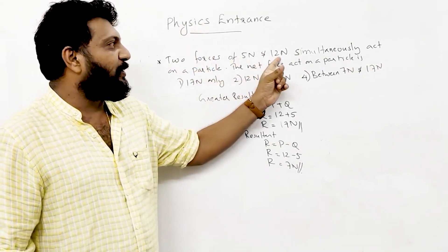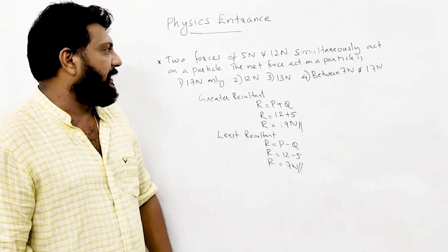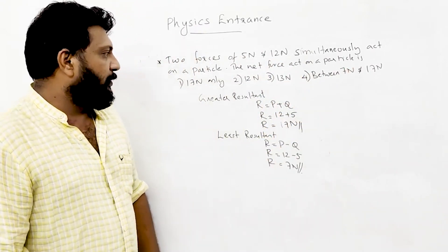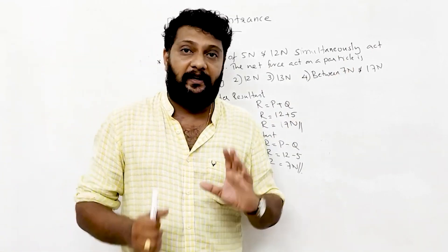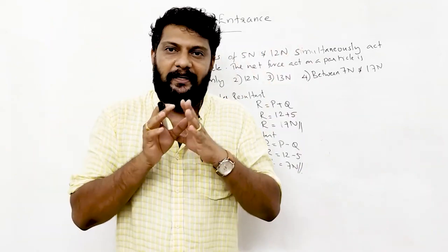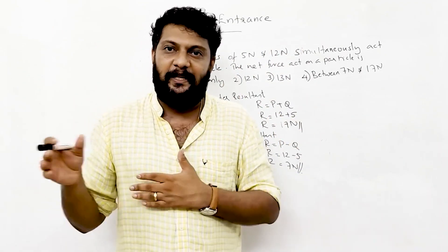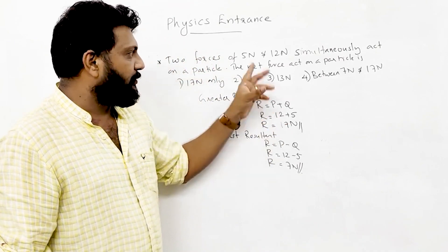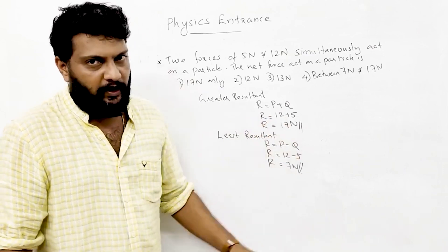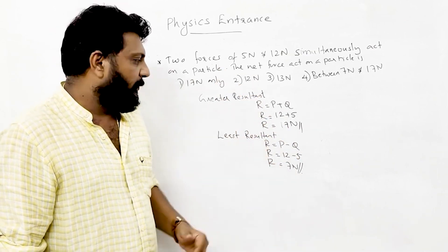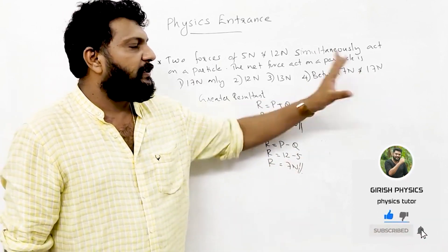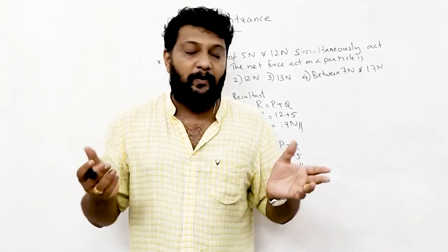Two forces of 5 Newton and 12 Newton simultaneously act on a particle. The net force on the particle — options are 17 Newton, only 12 Newton, 13 Newton, between 7 Newton and 17 Newton. Greatest resultant R = P + Q and least resultant R = P - Q = 12 - 5 = 7 Newton. So the answer is 'between 7 Newton and 17 Newton', option 4.